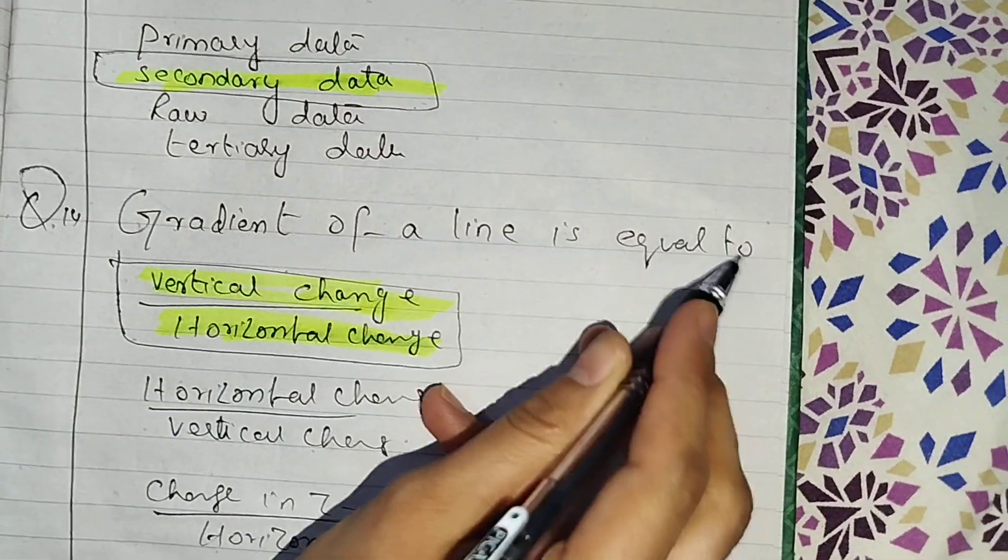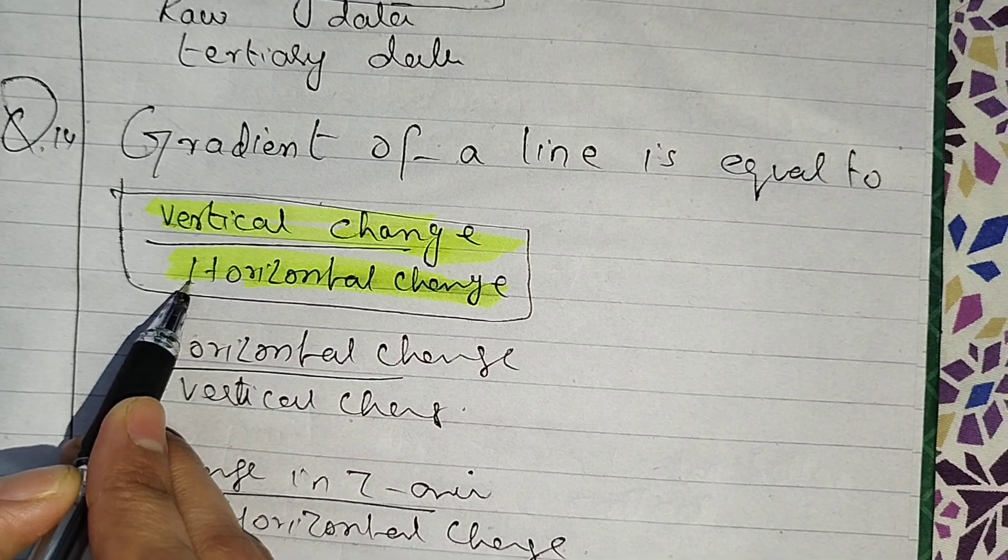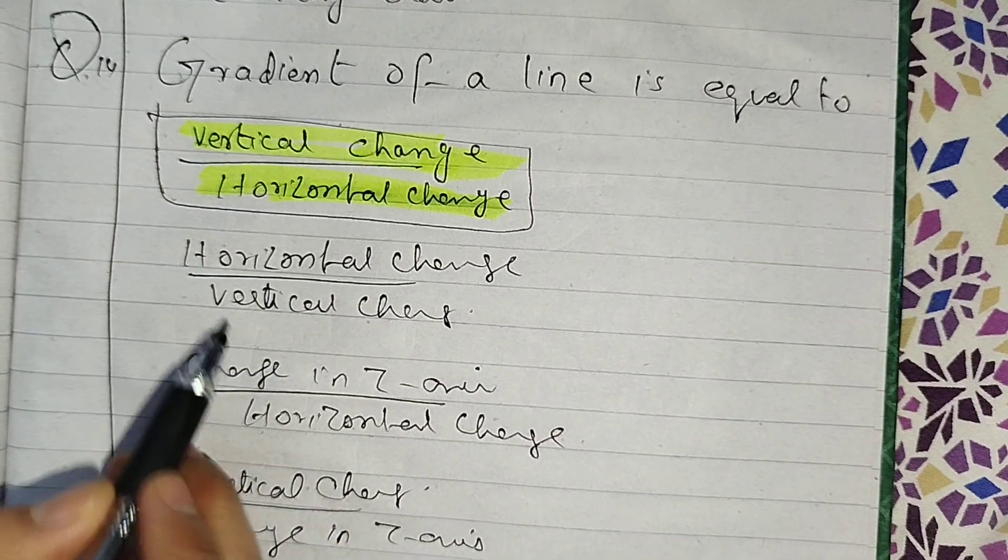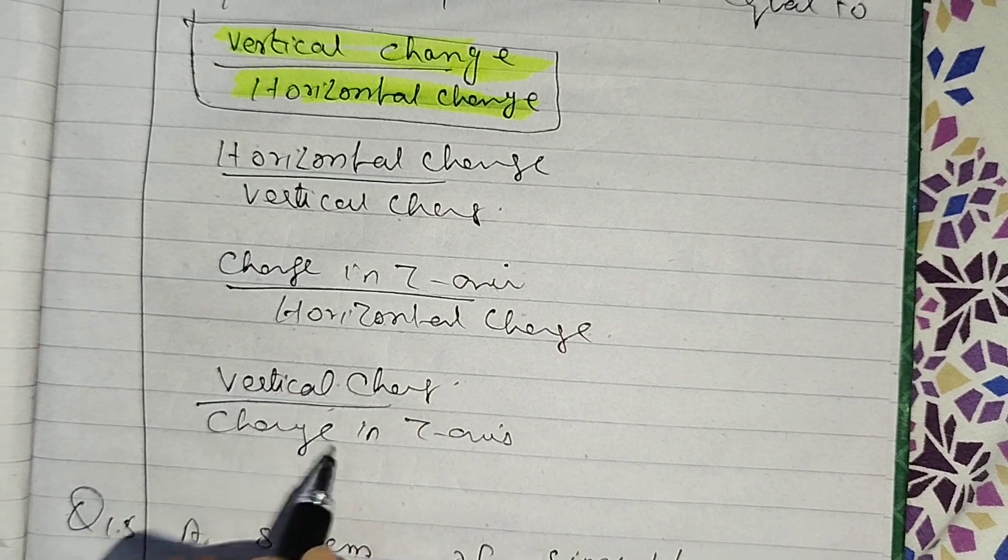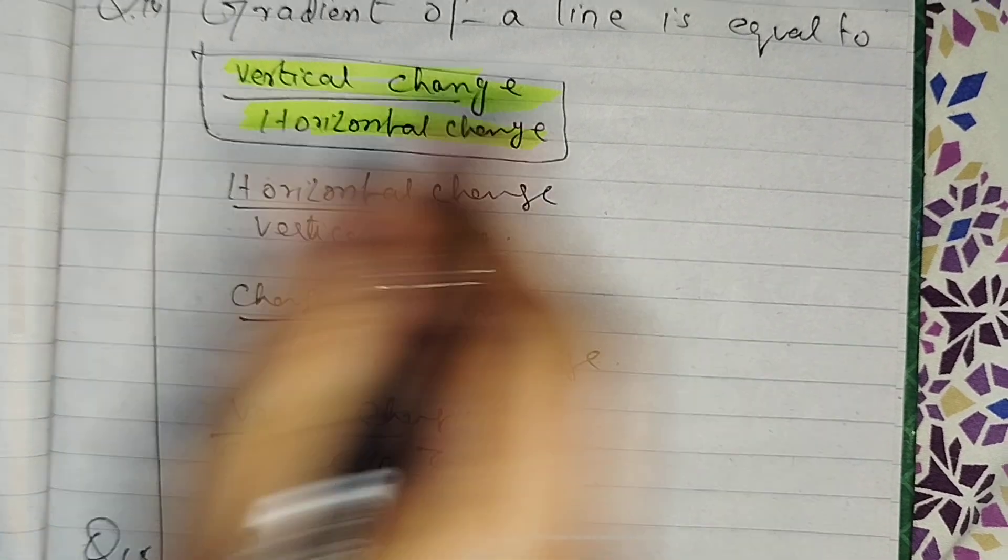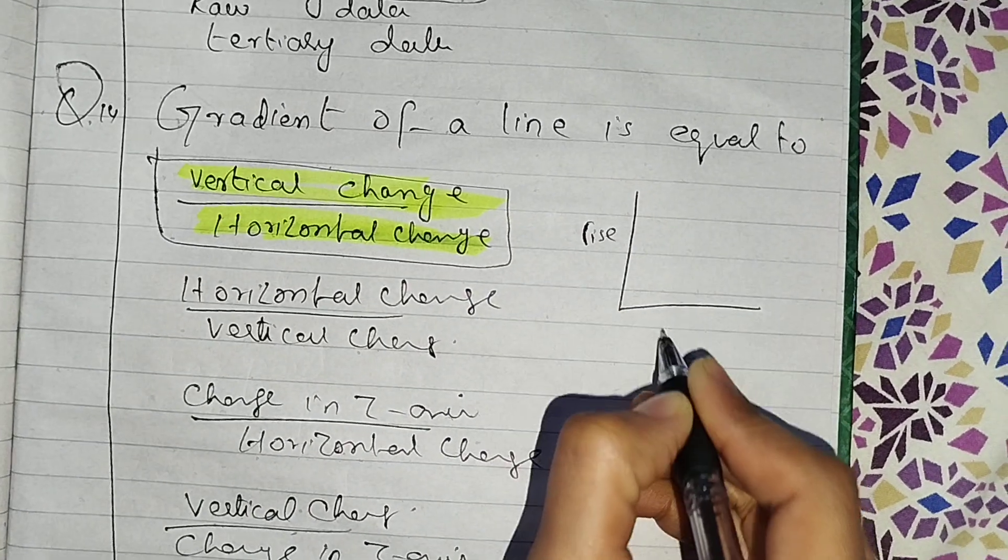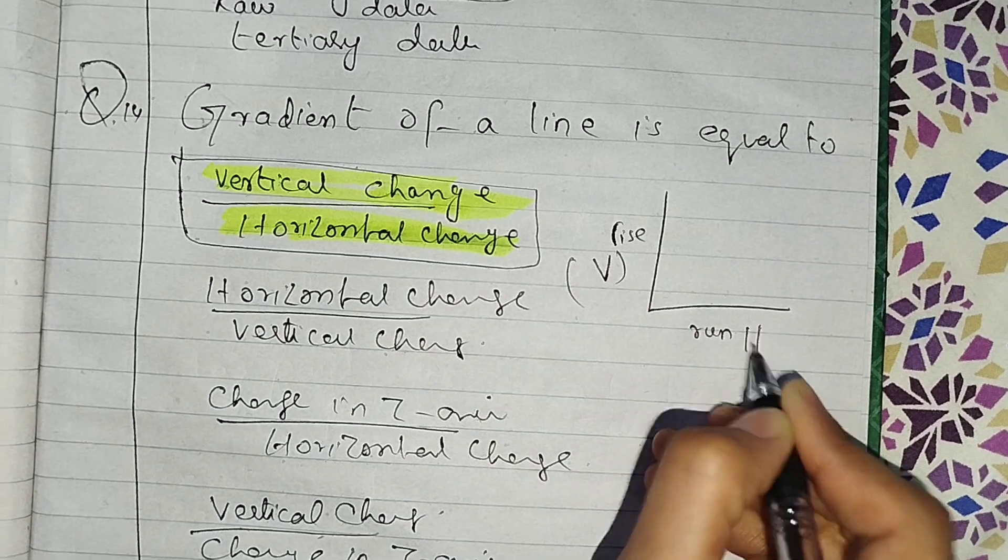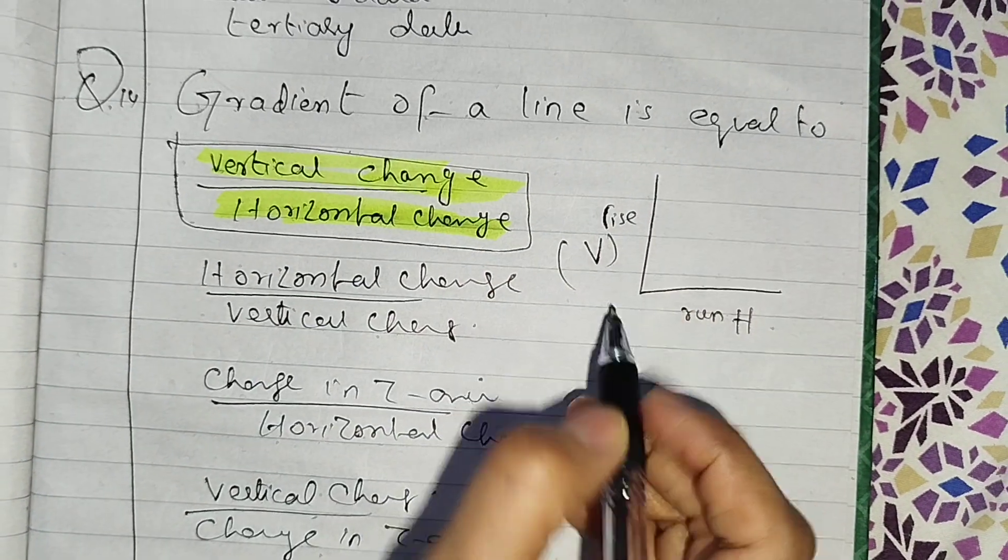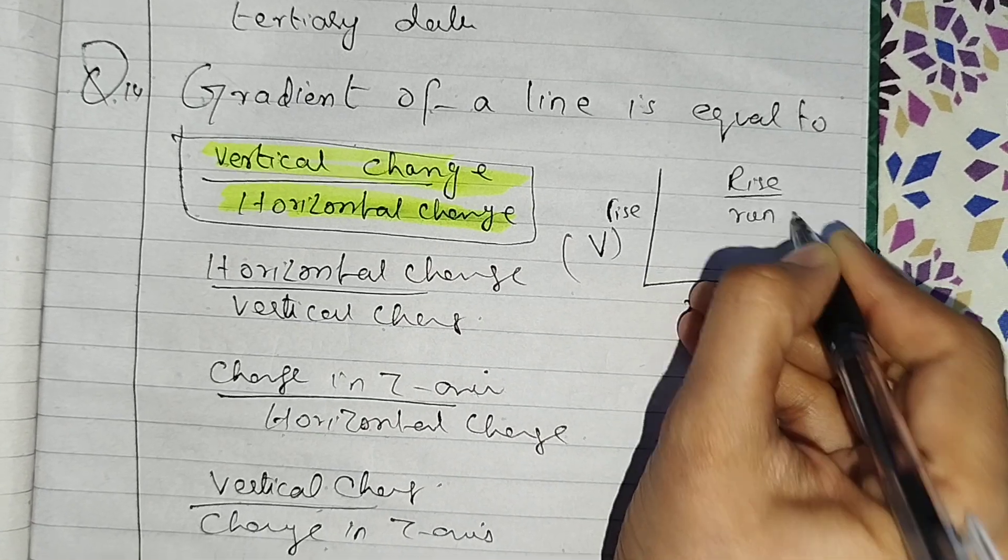Gradient of a line is equal to vertical change divided by horizontal change. Vertical change, change in y-axis. Horizontal change in x-axis. So you have this rise, and this place is called run. Vertical change and horizontal change. What do you have to do with gradient? Rise over run. You have to remember this thing in exercise: rise over run, vertical change divided by horizontal change.